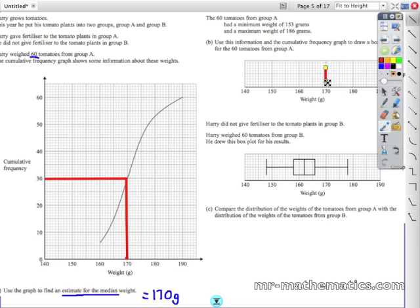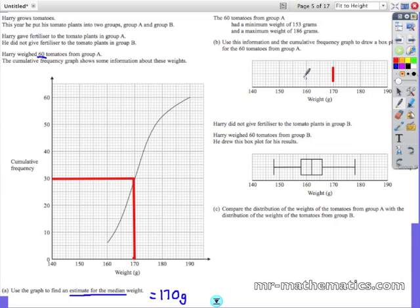We are going to plot that on our box plot and we are just going to mark off our box plot the minimum weight which is the left whisker at 153 and the right whisker at 186.